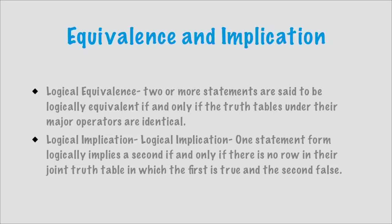Logical implication says that one statement form logically implies a second if and only if there is no row in their joint truth table in which the first statement is true and the second is false. If there's no row where the first is true and the second is false, the first implies the second. If two statements logically imply each other in both directions, then they are also equivalent statements.